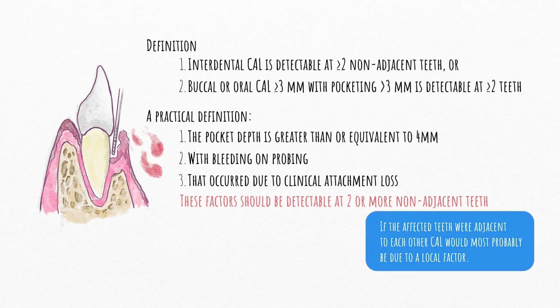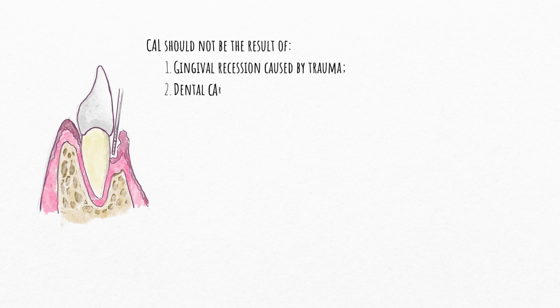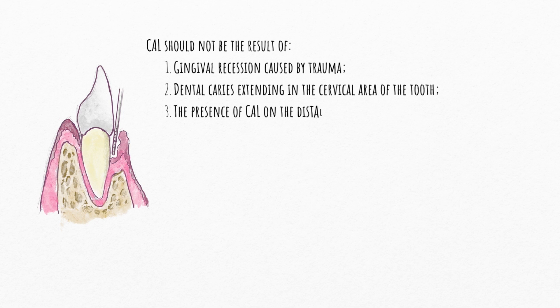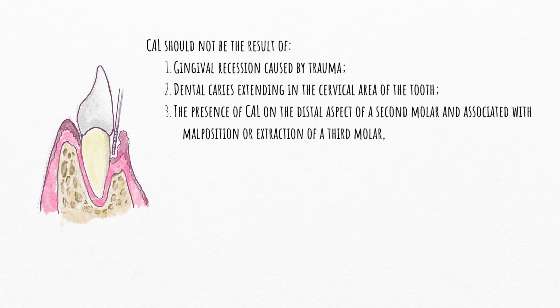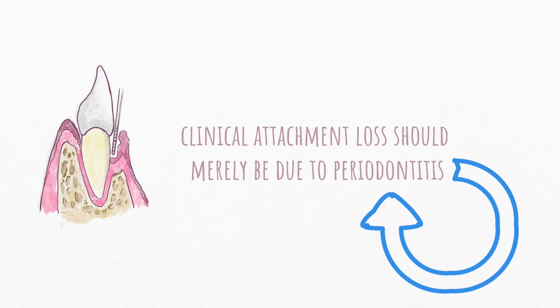If the affected teeth were adjacent to each other, CAL would most probably be due to a local factor. Moreover, to call this periodontitis, CAL should not be the result of gingival recession caused by trauma like brushing, dental caries extending in the cervical area, the presence of CAL on the distal aspect of a second molar associated with malposition or extraction of a third molar, an endodontic lesion draining through the marginal periodontium, or the occurrence of a vertical root fracture. In short, clinical attachment loss should merely be due to periodontitis.